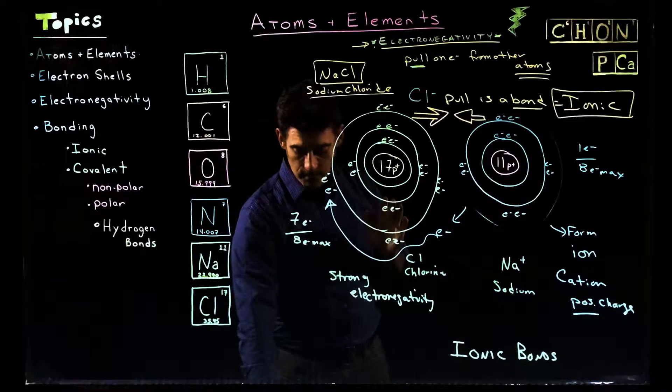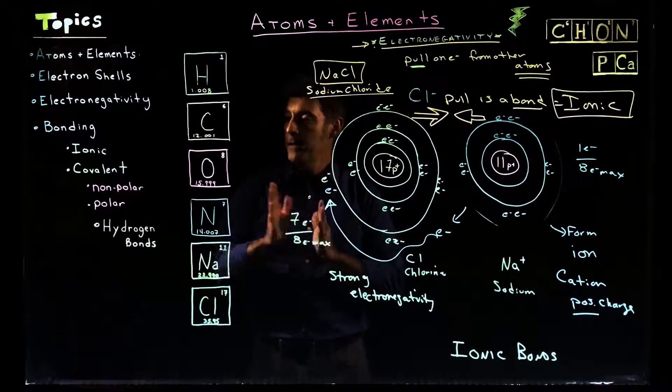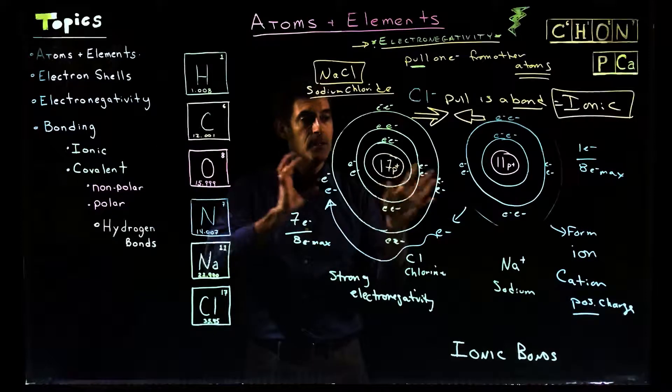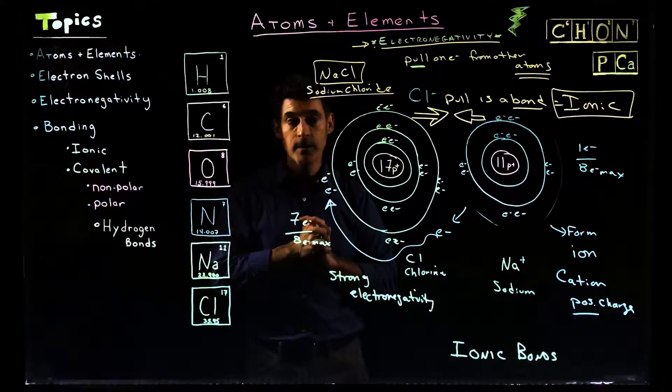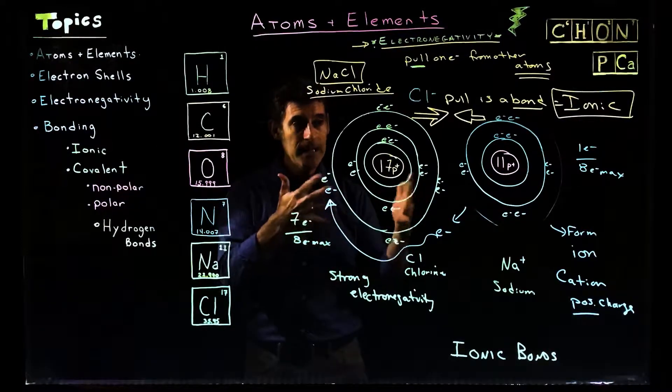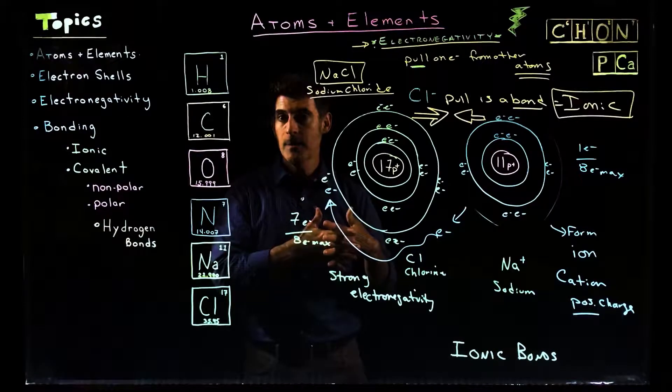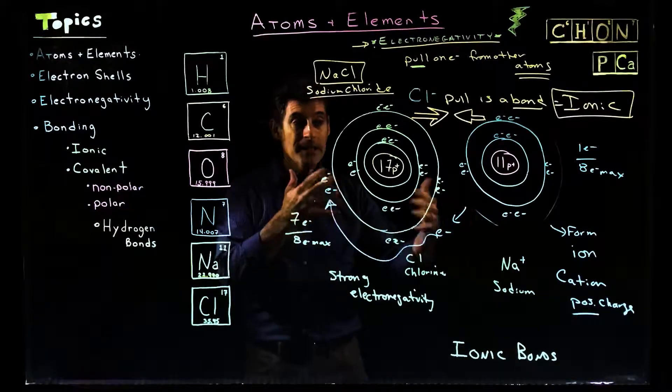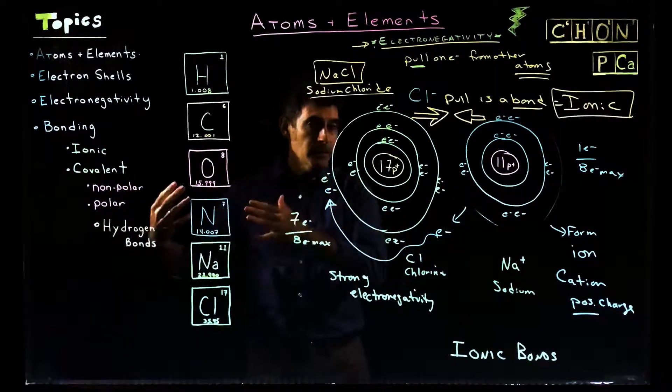So the last part of this, we're going to be moving into the polar covalence. That's going to be where there's going to be a sharing between electrons, not stealing, but the sharing is going to be unequal. It's going to be a little bit like this and a little bit like the other.